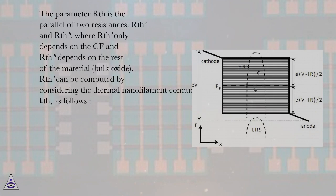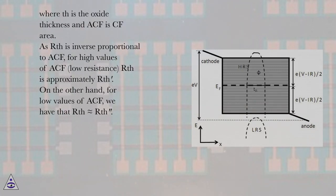The parameter RTH is the parallel of two resistances, RTHCF and RTHbulk, where RTHCF only depends on the CF and RTHbulk depends on the rest of the material, bulk oxide. RTHCF can be computed by considering the thermal nanofilament conductivity KTH as follows, where TH is the oxide thickness and ACF is CF area. As RTHCF is inverse proportional to ACF, for high values of ACF (low resistance), RTH is approximately RTHCF.